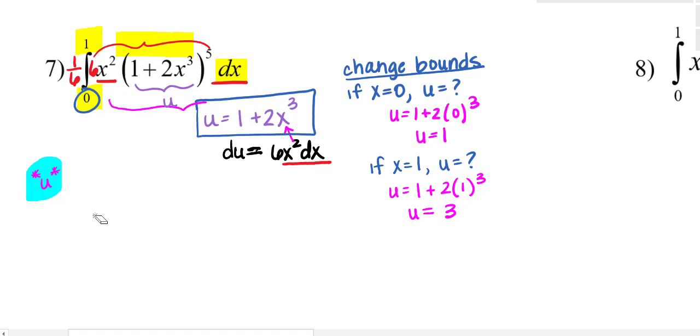So I'm going to rewrite this right here. So I'm going from 1 to 3. I have 1 sixth on the outside, and then I will have u to the fifth du. I will highlight here in green this was u, and then all of this other blue 6x squared dx was my du.